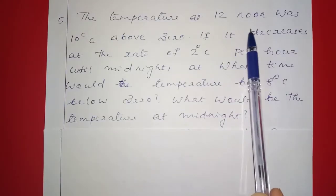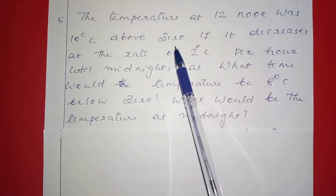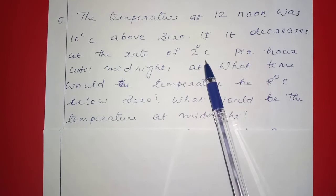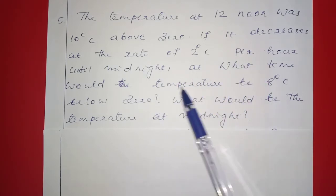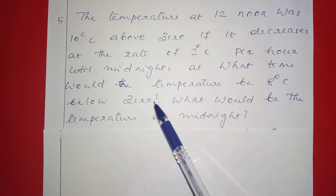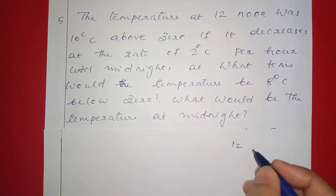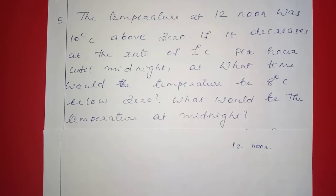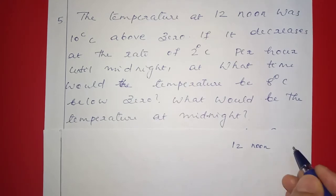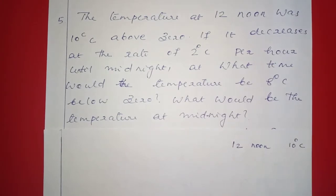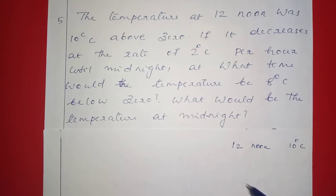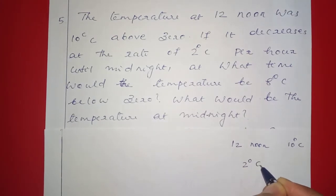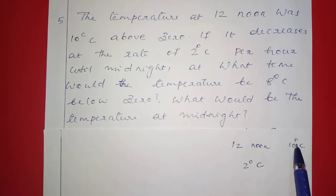The temperature at 12 noon was 10 degrees Celsius above zero. It decreases at the rate of 2 degrees Celsius per hour until midnight. At what time would the temperature be 8 degrees Celsius below zero? What would be the temperature at midnight? Temperature above zero is positive, temperature below zero is negative.